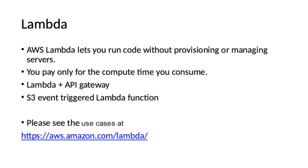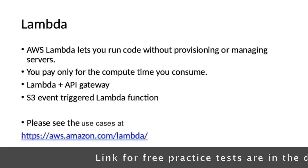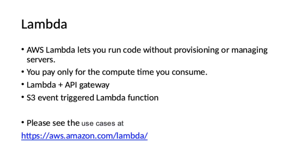AWS Lambda lets you run code without provisioning or managing servers — you pay only for the compute time you consume. You can invoke Amazon Lambda functions over HTTPS, which is where API Gateway integrated with Amazon Lambda is used. When you send an HTTP request to the API endpoint, the Amazon API Gateway service invokes the corresponding Lambda function. You can also use Amazon S3 to trigger AWS Lambda to process data immediately after an upload — for example, to convert a full image to a thumbnail, transcode a video, index files, process log files, validate content, or aggregate and filter data in real time.